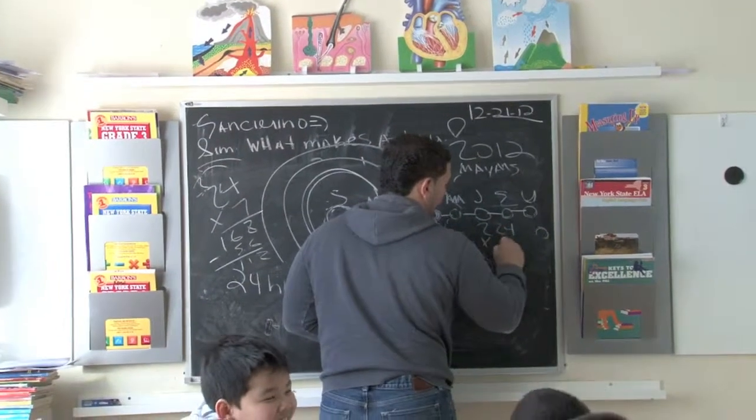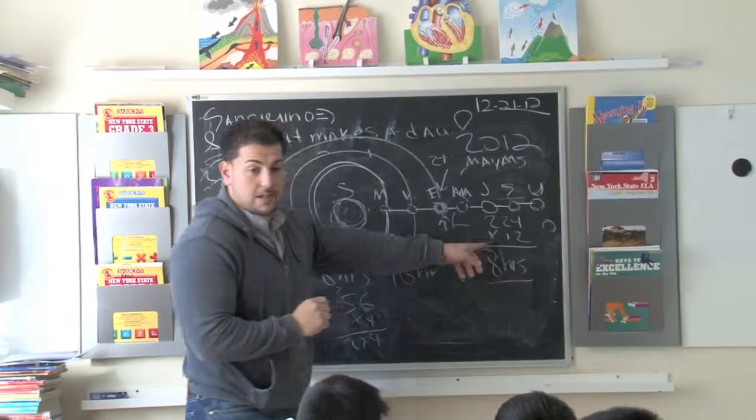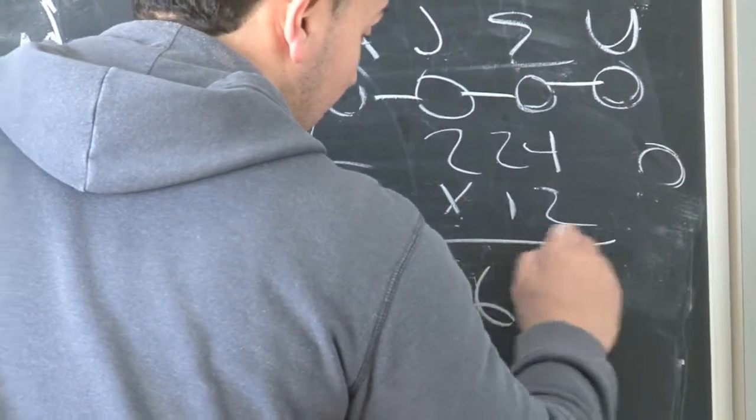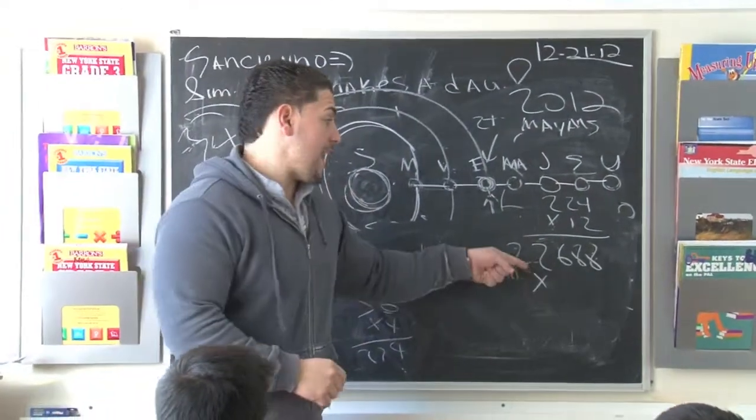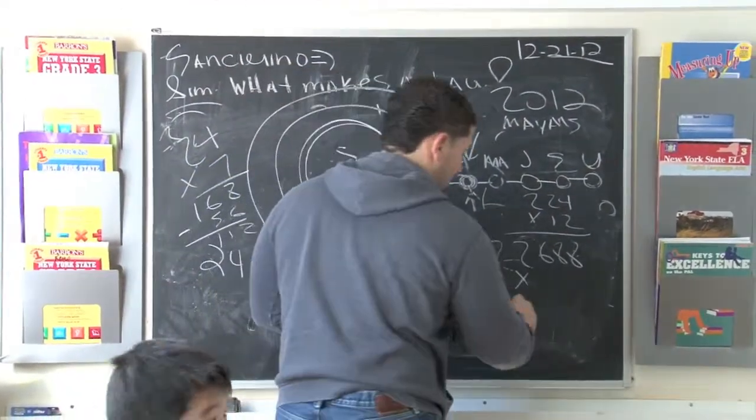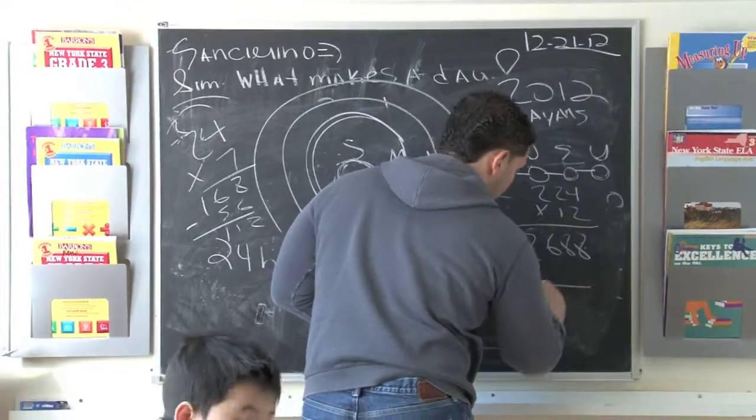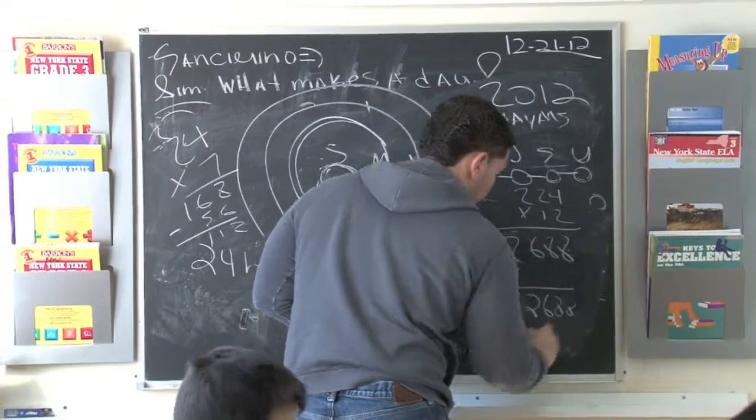224 times 12. Somebody do the math for me. 224 times 12. 2688. Alright, now do me a favor. Since you already got the number, divide that by 24. Just tell me what you got.